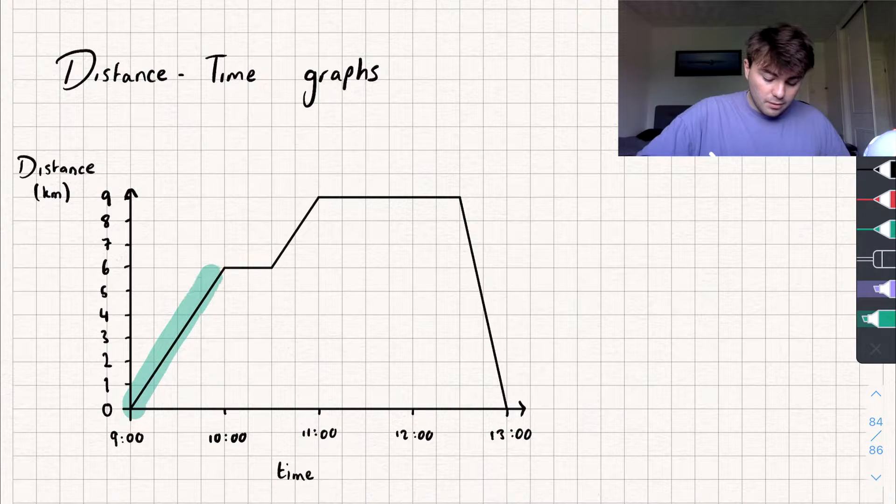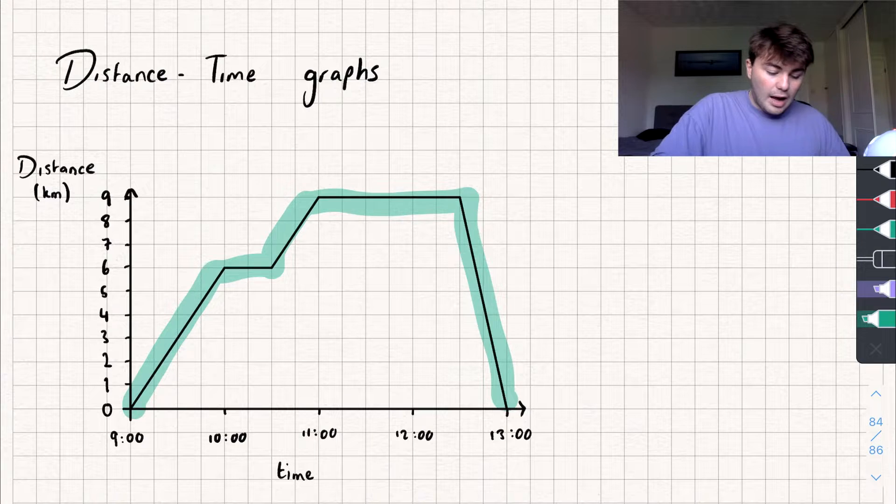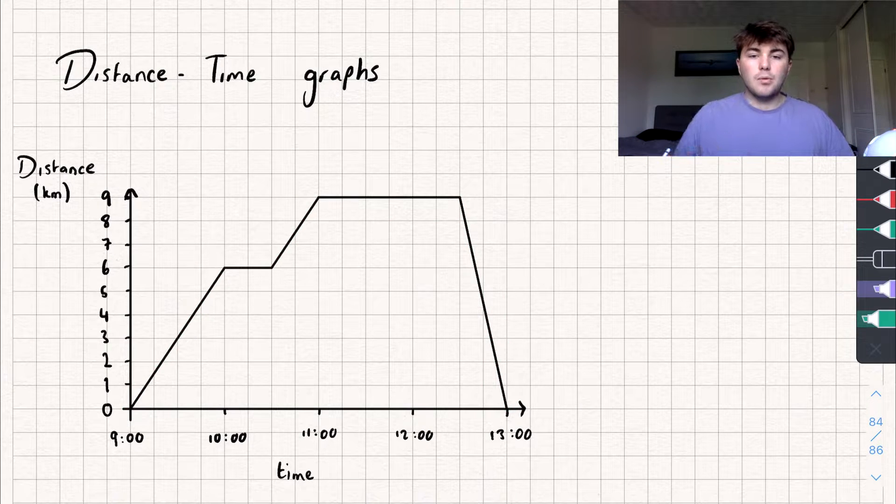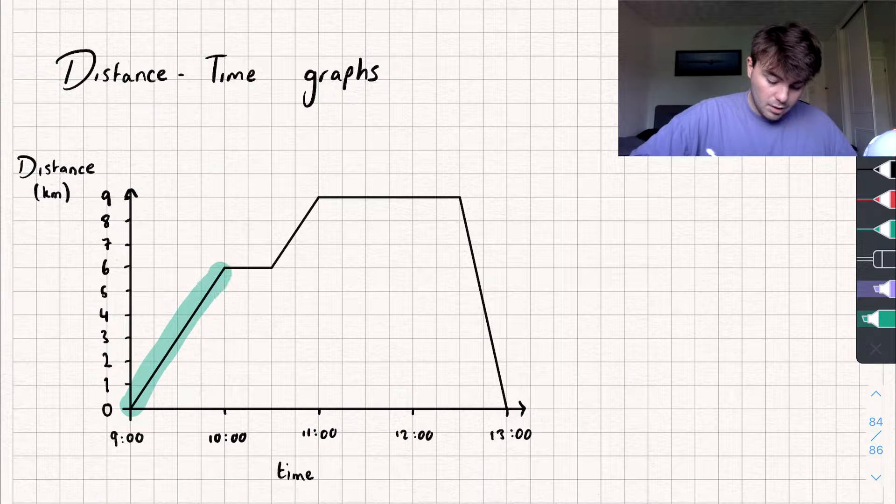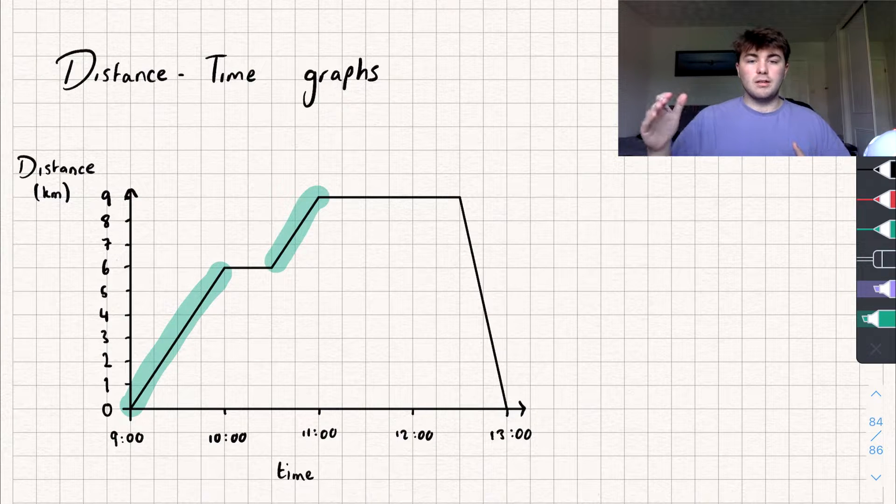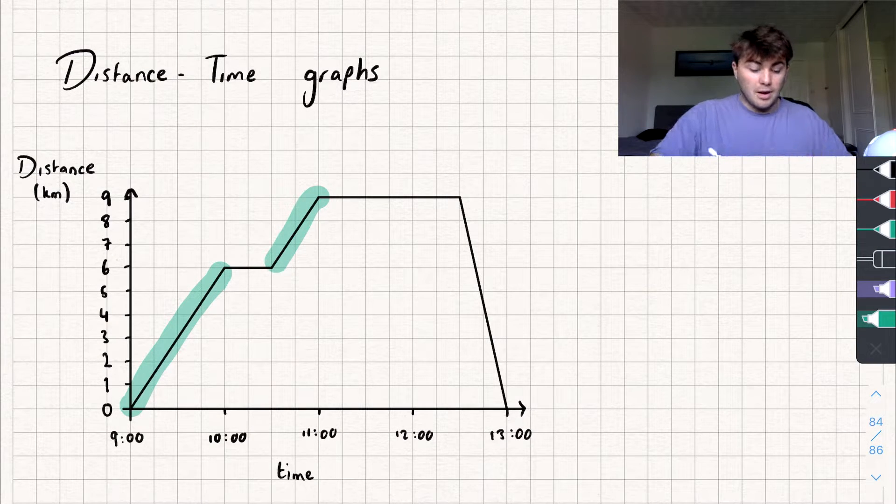What do the lines mean? How do we interpret them? Well, if I've got a line with a positive gradient, like this one here or this one, a line that's increasing, that's showing me I'm getting further away from where I started.